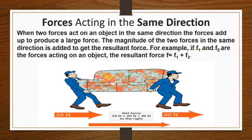Force acting in the same direction. When two forces act on an object in the same direction, the forces add up to produce a large force. The magnitude of the two forces is added to get the resulting force. For example, if F1 and F2 are forces acting on an object, the resultant force is F = F1 + F2.